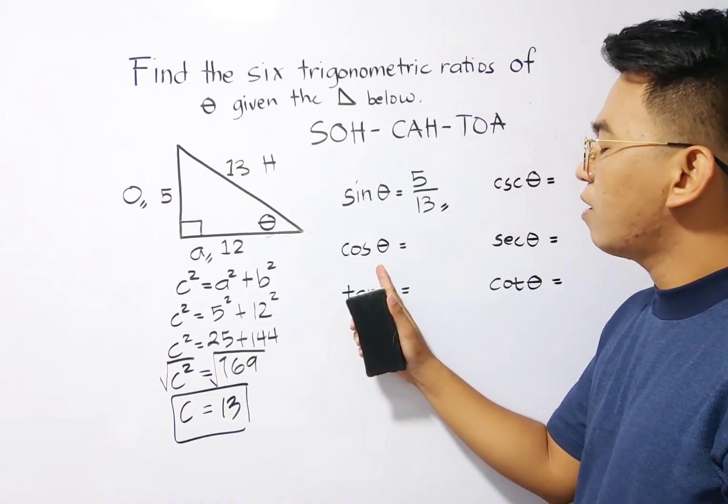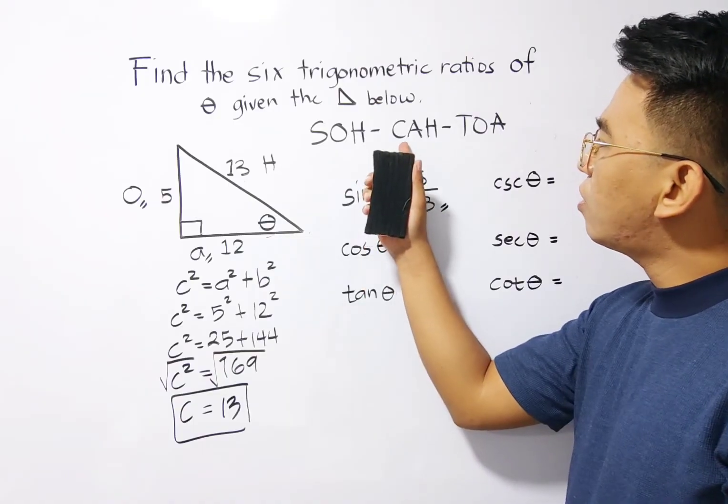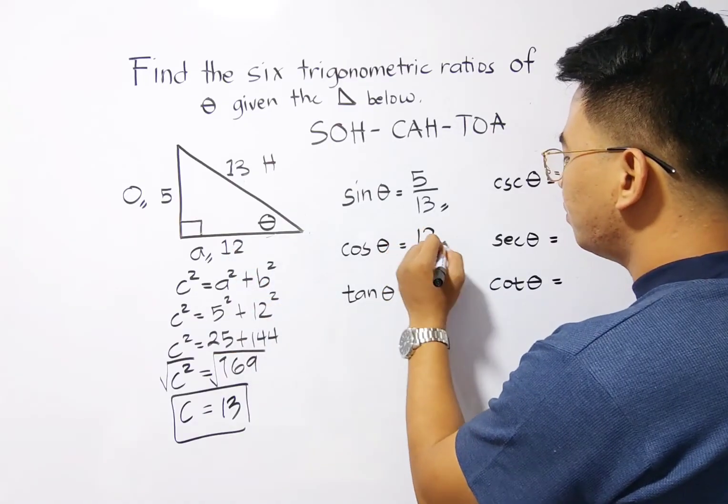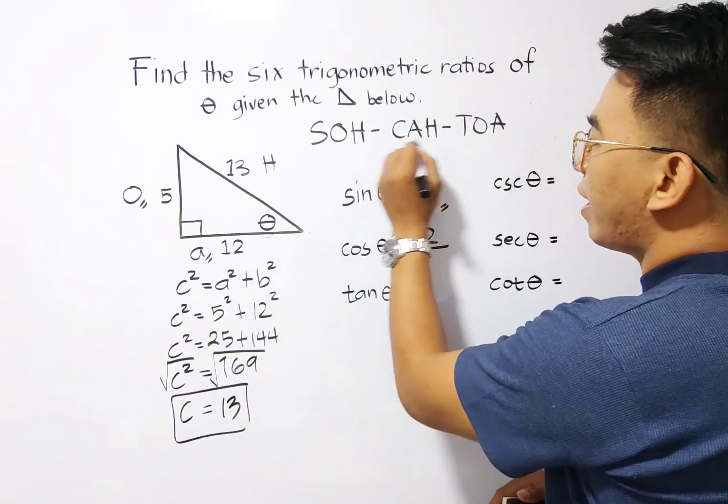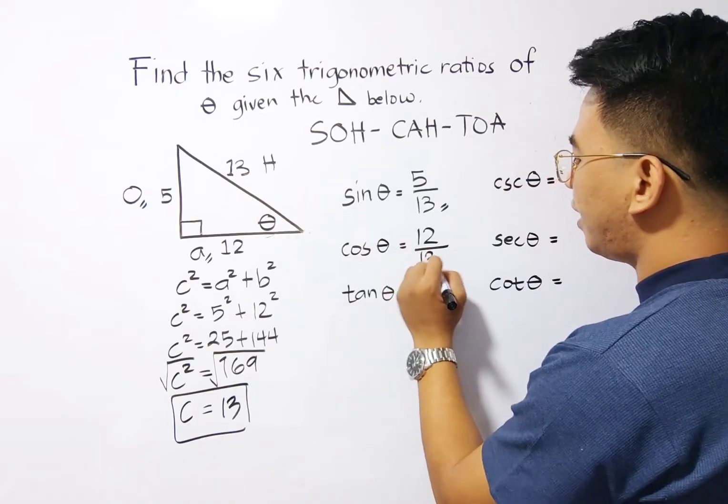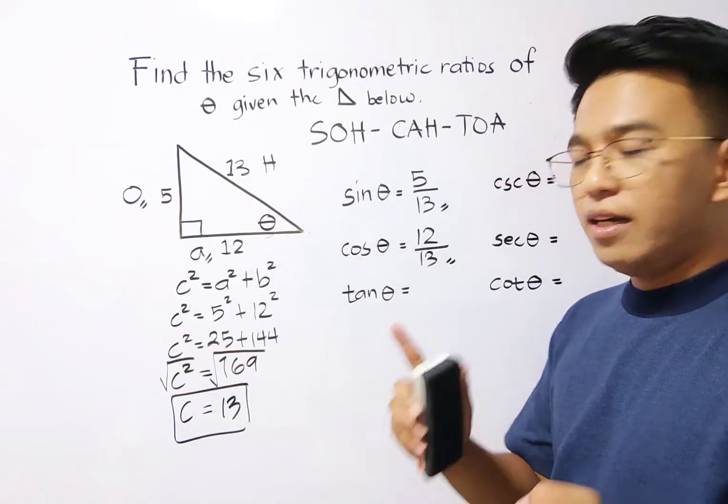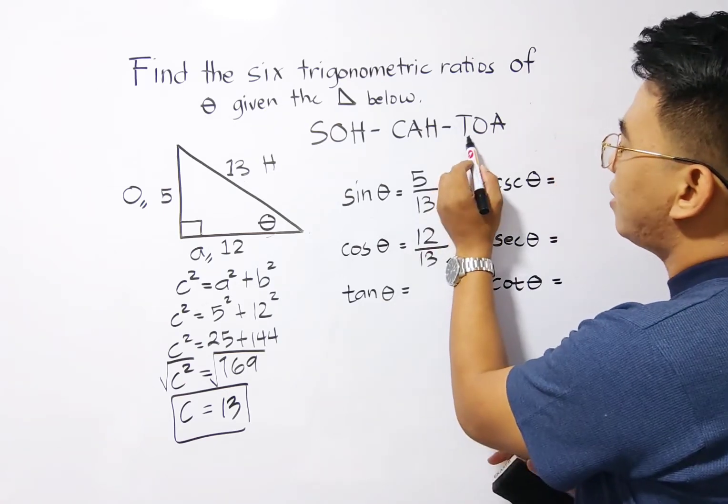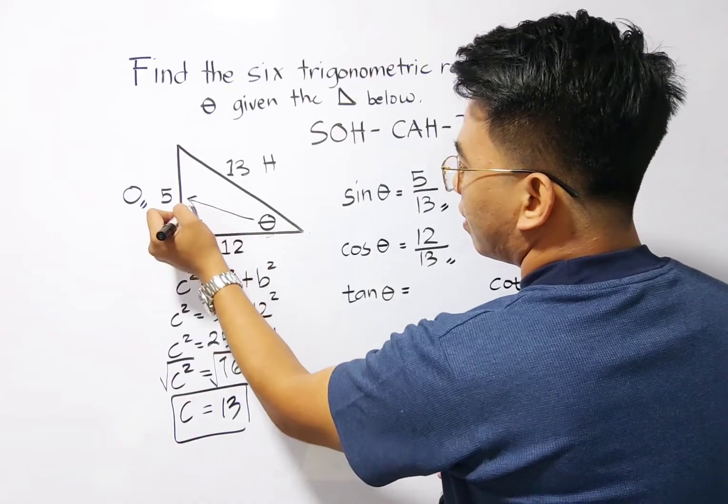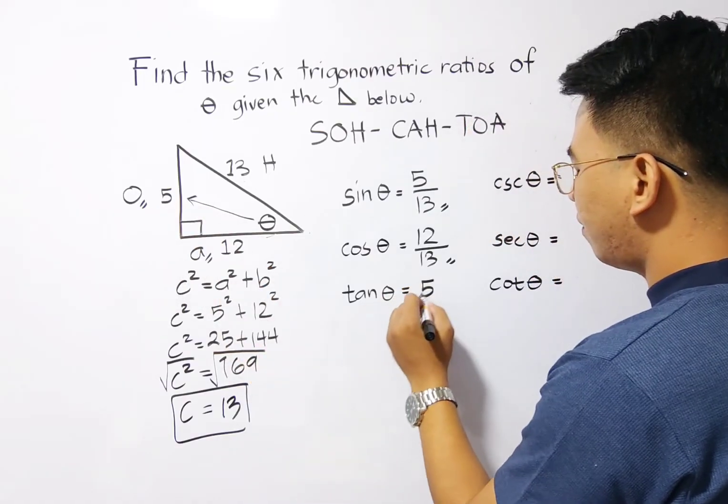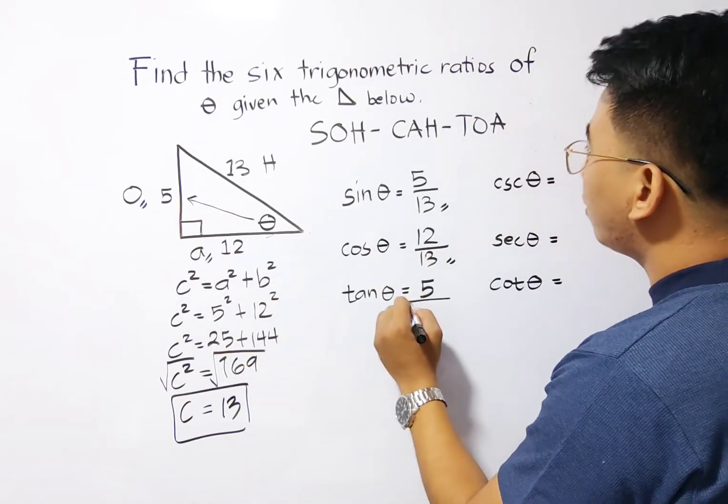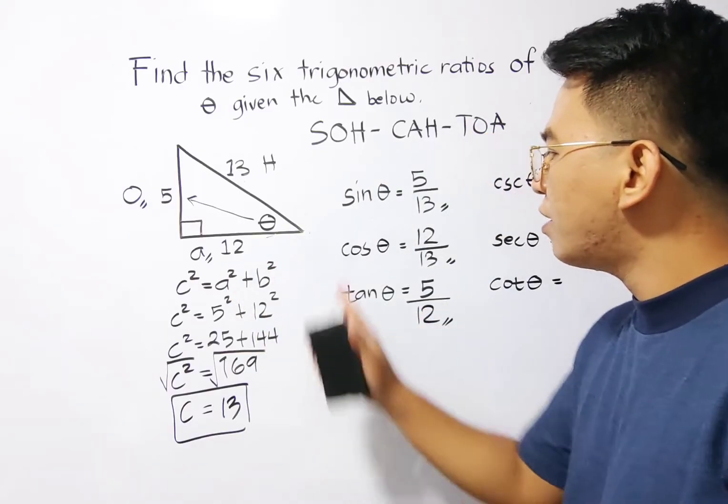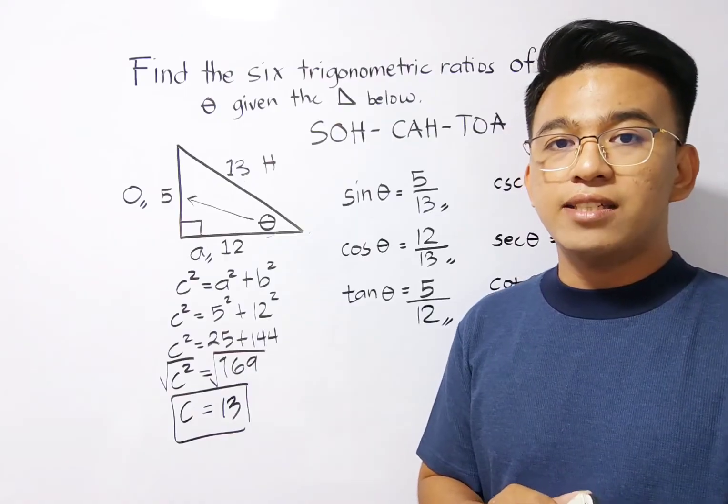Next, we have the cosine. For the cosine, we have cosine is equal to adjacent, which is 12, over your hypotenuse, which is 13. And this is the answer for it. Next, tangent. For the tangent theta, tangent is equal to opposite, which is 5, over your adjacent, which is 12. And this is the final answer for sine, cosine, and tangent theta. Now, let's move on with the other three.